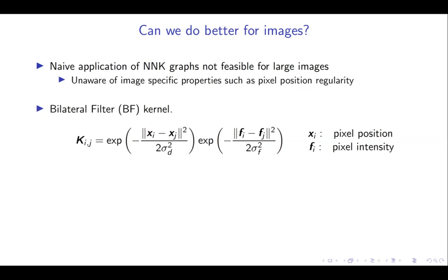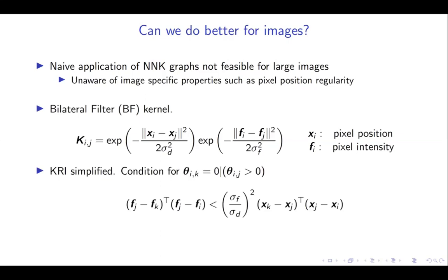Consider the bilateral filter kernel as an equation. Here, xi and xj denote the position of the pixel, that is, row and column in the image, and fi and fj corresponds to the pixel intensities at these locations. Applying the KRI condition with bilateral filter kernel gives us a simple condition to determine if a pixel k is to be connected given a pixel j is connected to node I. Here, due to the regularity of pixel position in images, the term on the right of the equation is independent of the image and can be pre-computed. We will use this condition with positive thresholds, the reason for which will be explained as part of the algorithm to prune pixels in the window, thereby reducing the complexity associated with applying NNK for constructing graphs and images.